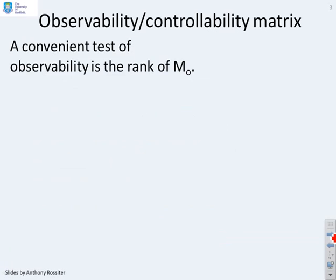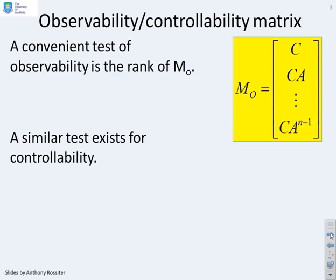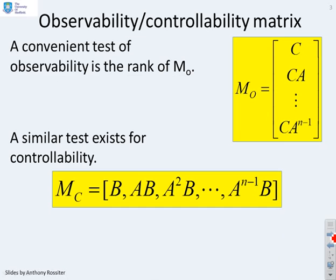A reminder of the observability and controllability tests. A convenient test of observability is the rank of a matrix M given by C, CA, down to CA to the n minus 1. If A is dimension n by n, we need matrix M to be rank n for full observability. Equivalently for controllability, we have the matrix B, AB, all the way to A to the n minus 1 times B, and the system is fully controllable if the rank of this matrix is at least n.